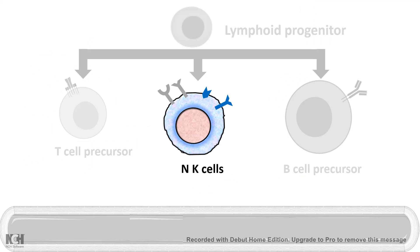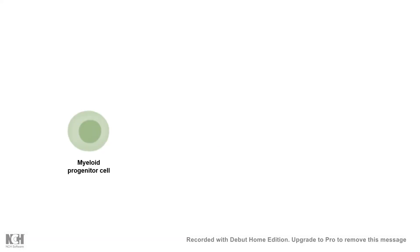Apart from T cell and B cell precursors, another important cell type derived from the lymphoid progenitor is the natural killer cell. Natural killer cells are the cold-blooded killers of the immune system — they kill any target they find threatening. They are particularly important in tumor immunity and defense against viruses.